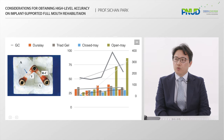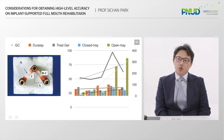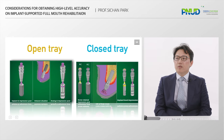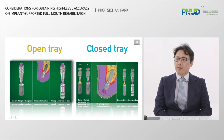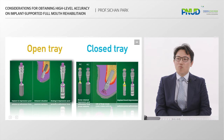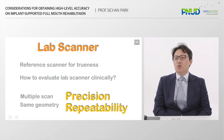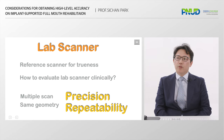Some technicians or clinicians use the reverse scan technique, which uses a lab-analog type scan body. But this experiment shows we should pay attention to reverse scan because internal stress can exist in it. I prefer closed tray impression rather than open tray technique — it's easier and more accurate. And the lab scanner is the most accurate; it is considered a reference scanner for inspecting other things.